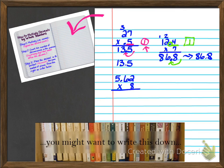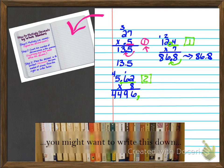Let's try one last example: 5.62 times 8. Go ahead and pause the video and work this problem out. After multiplying, I got 4,496. I look at the problem, locate my decimal — it's between the 5 and the 6 — and there are two numbers that come after that decimal point, so there are two decimal places. In my answer I go in two spots, placing the decimal between the 4 and the 9, giving a final answer of 44.96.